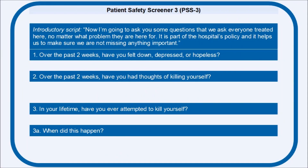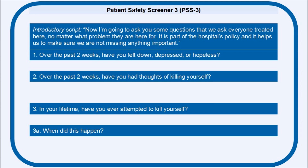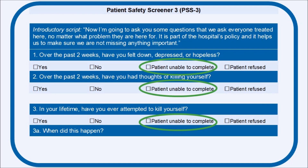The key elements of the PSS-3 screener are a brief introductory script and three questions. There is also one follow-up question depending on the patient's response to question 3. This tool is designed to identify patients with suicide risk and should be used with all patients regardless of their chief complaint, not just patients who are presenting with a psychiatric complaint or current suicidality. To be implemented with fidelity, all three questions on the PSS-3 must be asked and each question needs to be asked exactly as it is worded and appears on the screening tool. Rephrasing these questions can interfere with proper screening. If a patient cannot respond appropriately to any question, it is important that this is documented as unable to complete in the patient record instead of documenting it as a no.